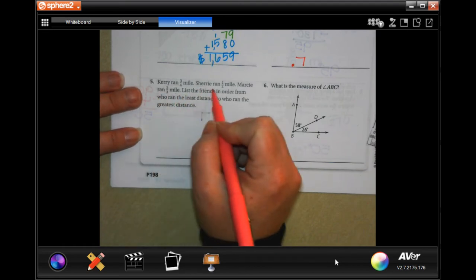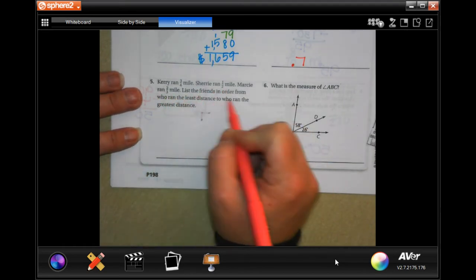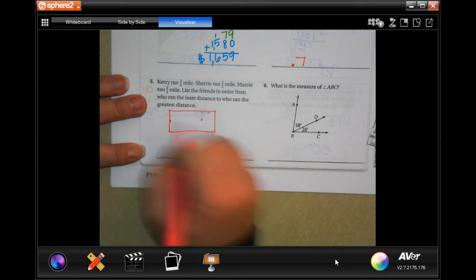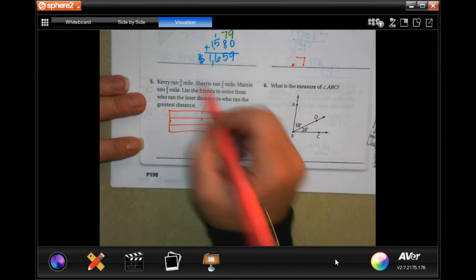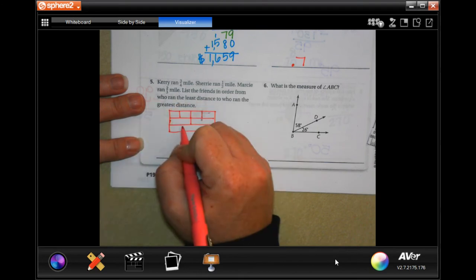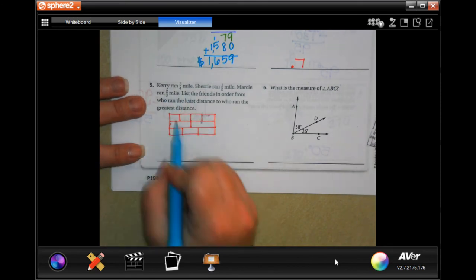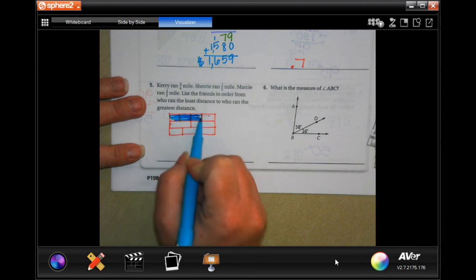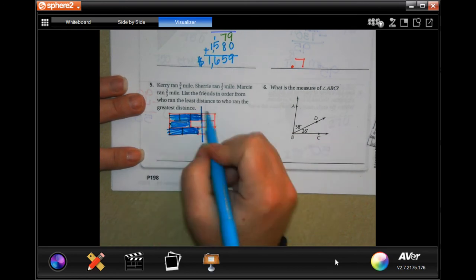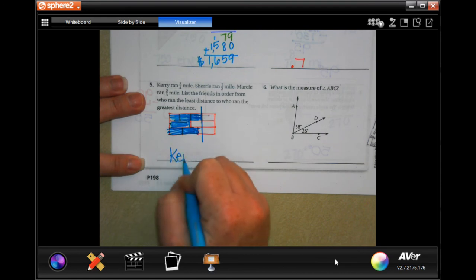Carrie ran three-quarters of a mile. Sherry ran a half a mile. Marcie ran two-thirds of a mile. List the friends in order from who ran the least distance to who ran the greatest distance. I'm going to do this my way. You ready, y'all? Here are our three friends. The first one is split into four. The second one is cut into two. And the third one is cut into three. So, Carrie ran three of those quarters. Sherry ran a half. And Marcie ran two-thirds. So, who ran the greatest distance? Well, that one's the longest, and it's the first one. So, Carrie.